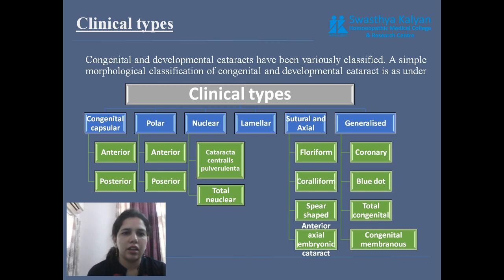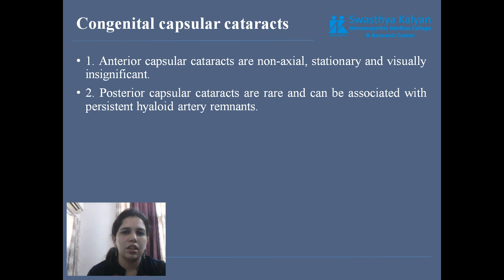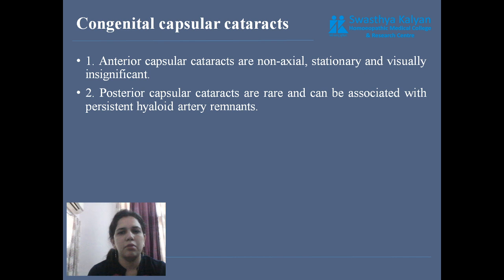These are the clinical types of congenital cataracts, which we discuss one by one. First is congenital capsular cataract, divided into two parts: anterior and posterior. Anterior capsular cataract is non-axial, stationary and visually insignificant — the visual loss is minimum. Posterior capsular cataract is rare and can be associated with persistent hyaloid artery remains.